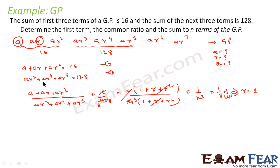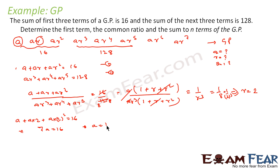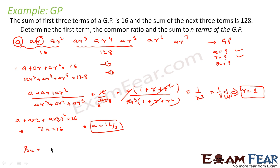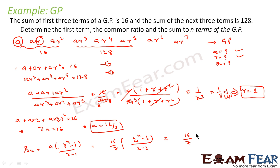So r = 2. Now we put this value into equation 1: a + 2a + 4a = 16, giving 7a = 16, so a = 16/7. Now Sₙ = a(rⁿ − 1)/(r − 1), with a = 16/7 and r = 2, so Sₙ = (16/7)(2ⁿ − 1) / (2 − 1) = (16/7)(2ⁿ − 1).